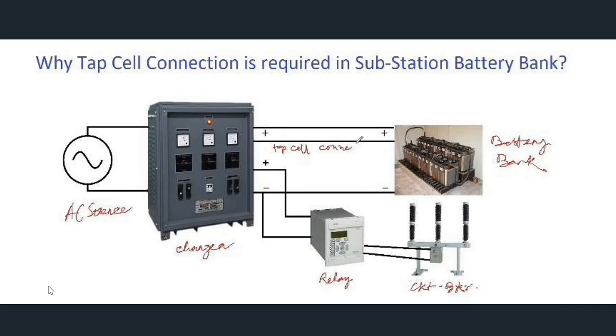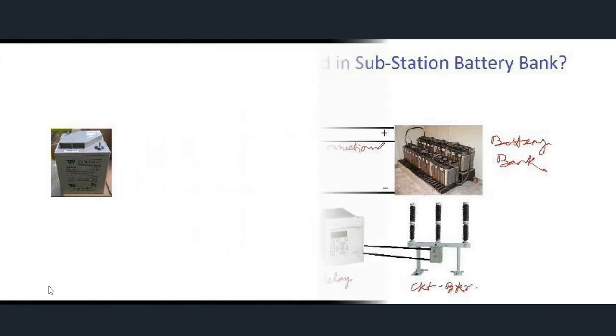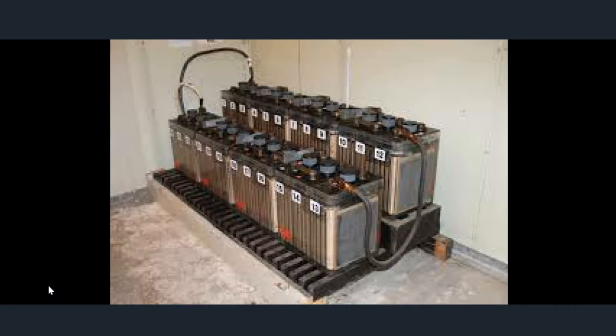We will discuss why this tap cell is connected. This is how a cell of a battery looks like. When a number of cells are connected in series to increase the voltage, the battery looks like this. If we show it in a diagram it looks like this, and symbolically the battery is shown like this.